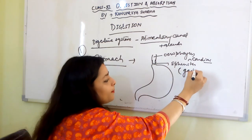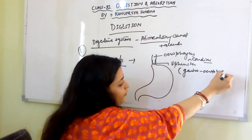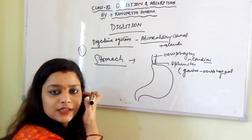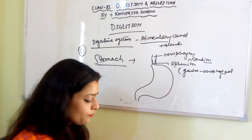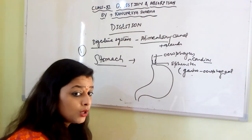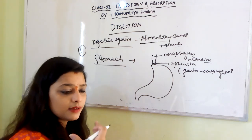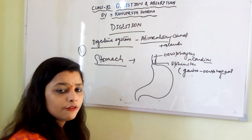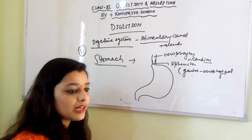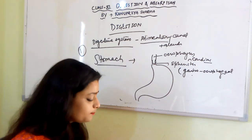The cardiac sphincter is also known as the gastroesophageal sphincter. It makes sure food once entered doesn't move back into the esophagus and that the acid produced in the stomach for digestion doesn't go back either. When it does go back, we feel acidity because the acid is returning to the esophagus.